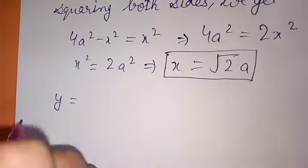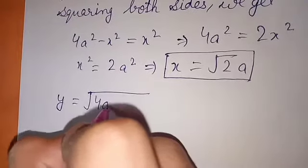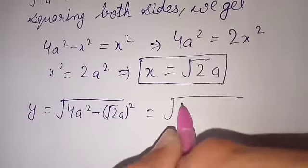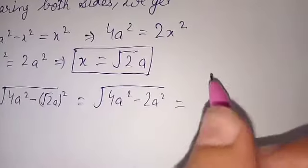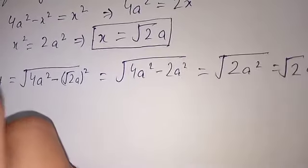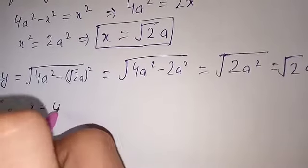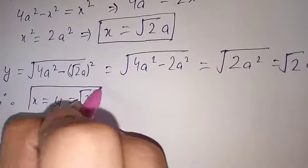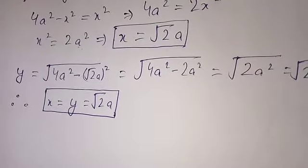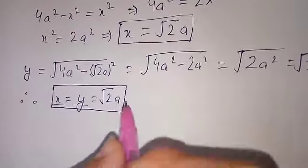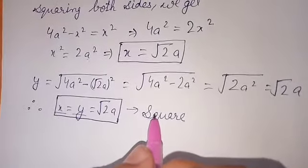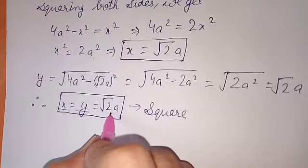Now we can find the value of Y. Y = √(4A² − X²) = √(4A² − (√2·A)²) = √(4A² − 2A²) = √(2A²) = √2·A. Therefore X = Y = √2·A, or A√2. Since length equals breadth, we can say it is a square. We have proved that the rectangle is actually a square of side A√2.